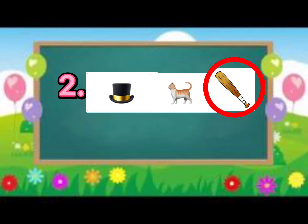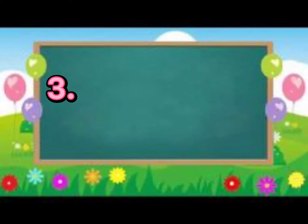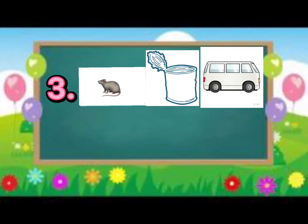Fabulous! Next, number three: rat, can, van. Where is the van? Circle the van.